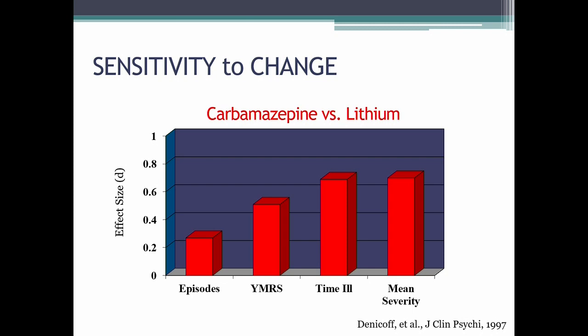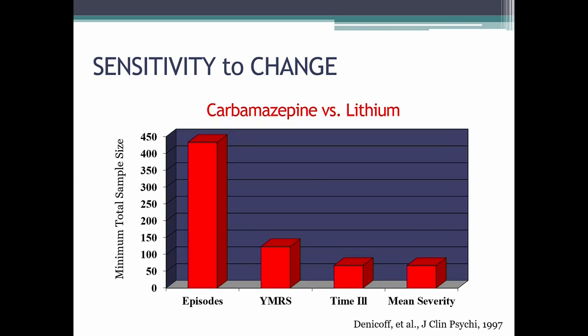So you have effect sizes and rating scales — but why should this matter to you? The reason it matters is because it has implications for the sample size you would need for your study. If you used the number of episodes from this mania study, you would need over 400 patients. In this study, investigators followed patients on lithium or carbamazepine for a full year — so having 400-plus people followed for a full year could be a very difficult challenge. If you use the Young Mania Rating Scale, that number drops to about 120, which is much more manageable.